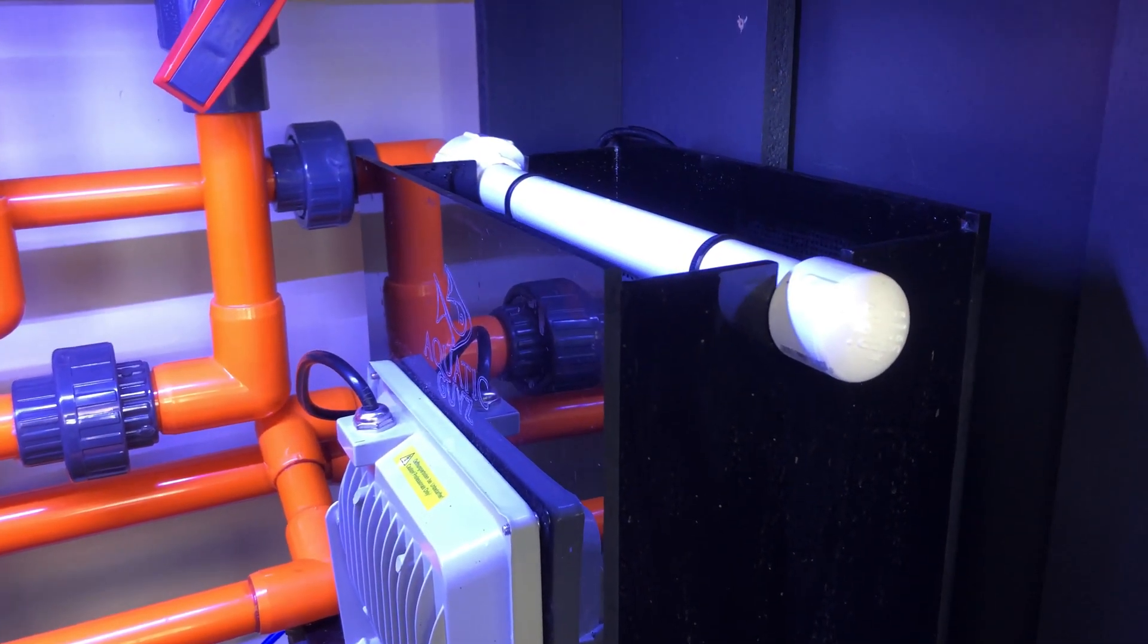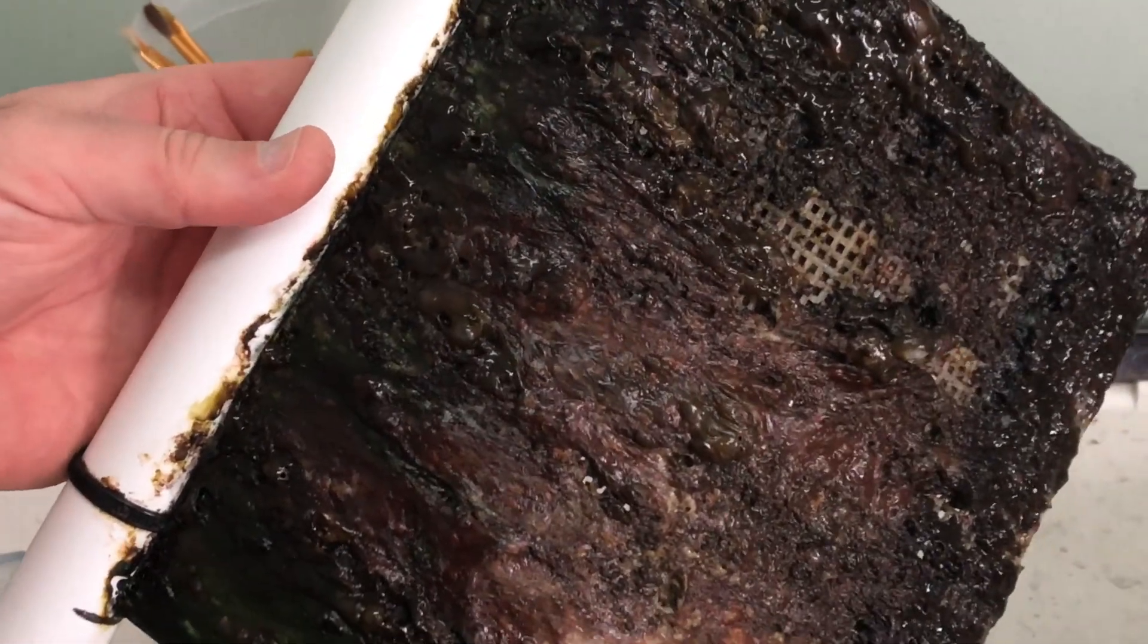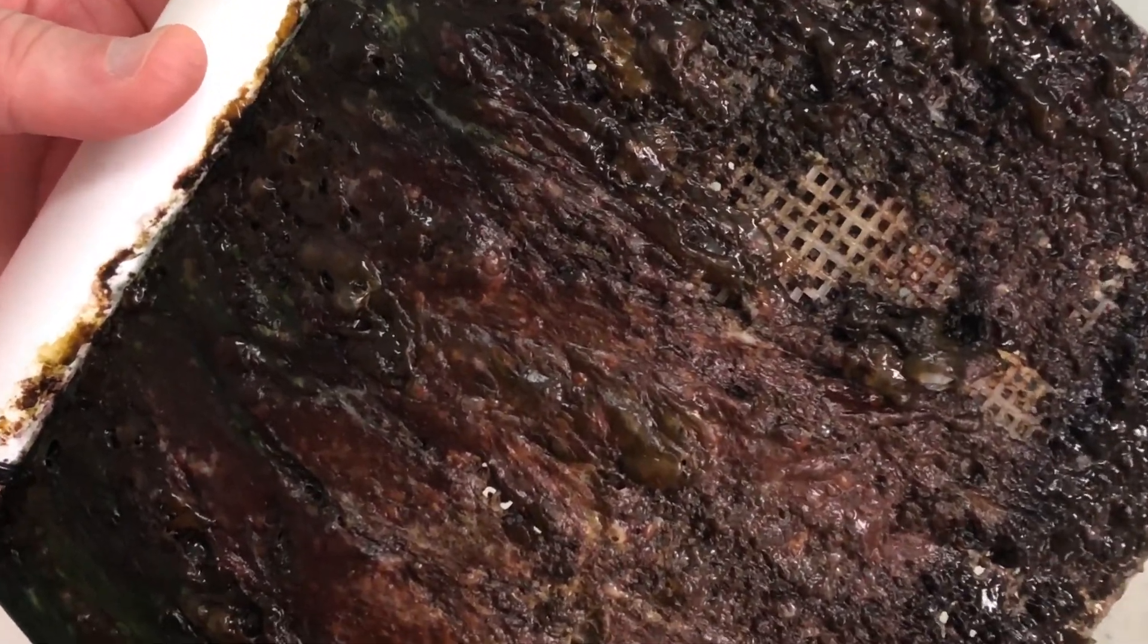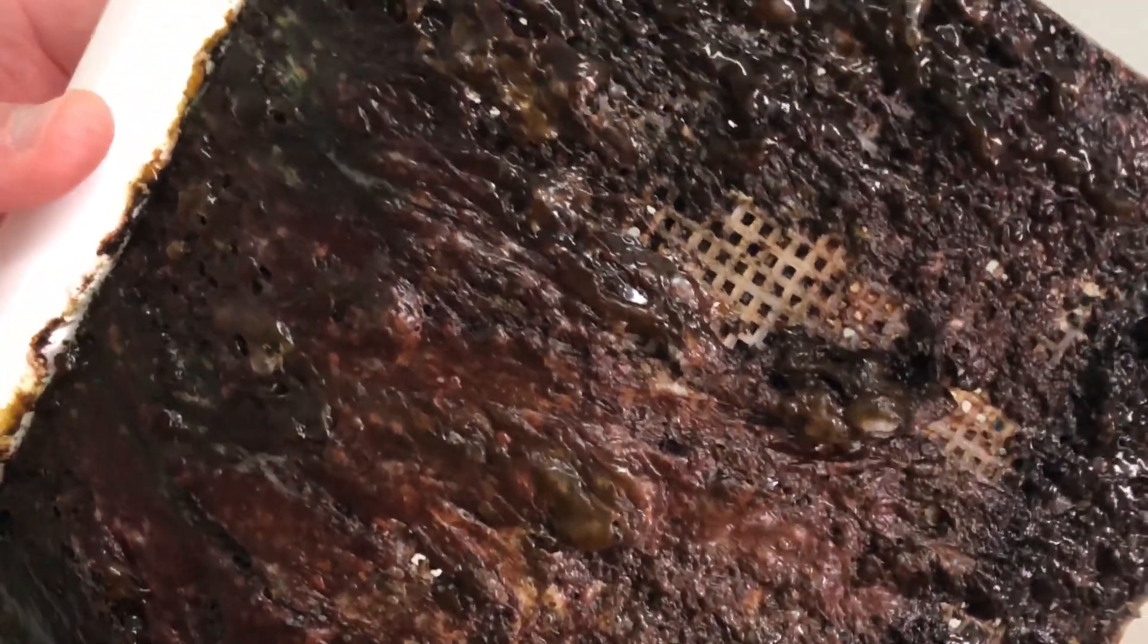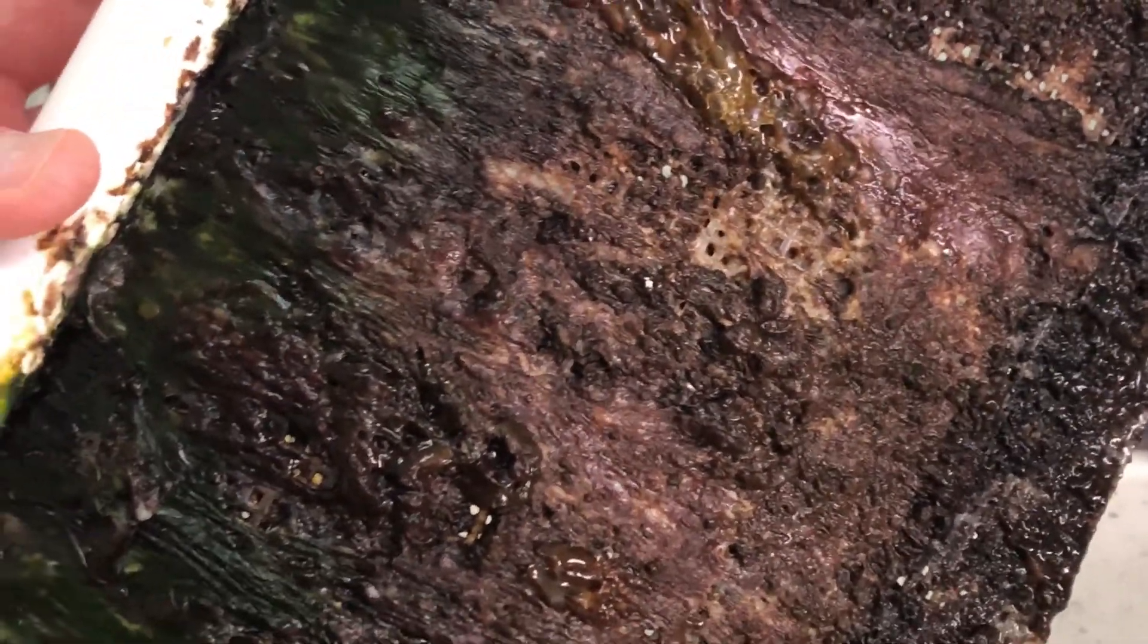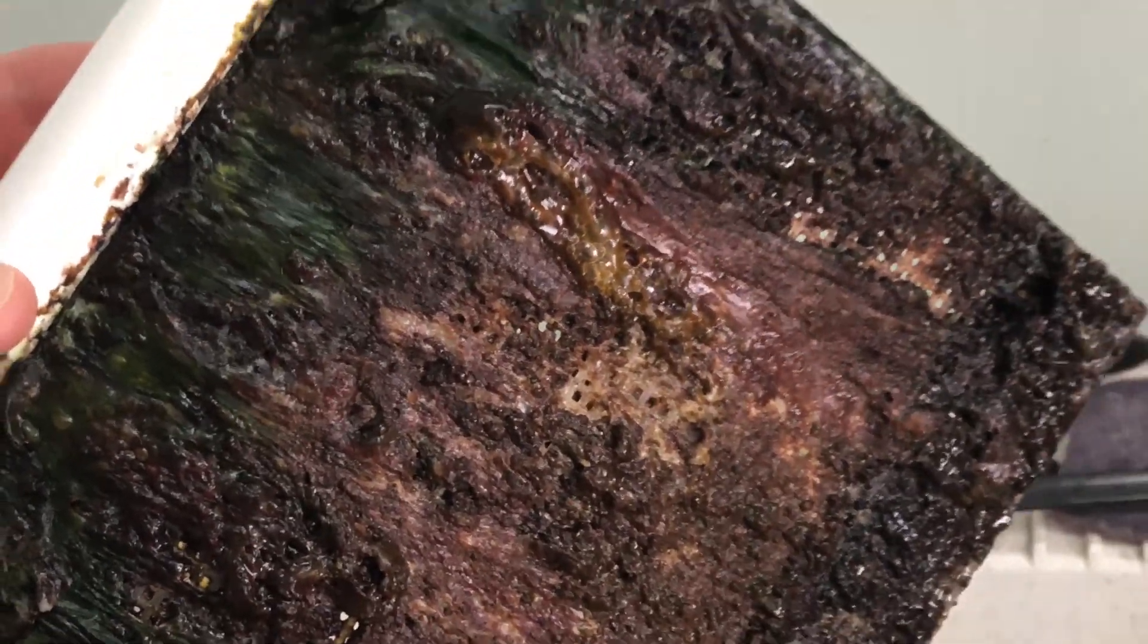All right, so here is the algae scrubber after about five, maybe six weeks. This is the initial run, the first time I'm actually taking it out, so it was breaking in and algae was seeding. I think going forward it should build up a lot easier now that it's taken hold of this plastic part. I will go ahead and scrape it with this plastic scraper I have, scrape it all off, and we'll take a look at it once cleaned off.